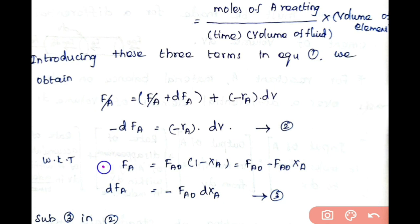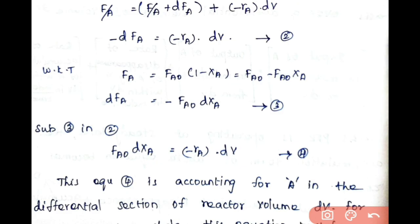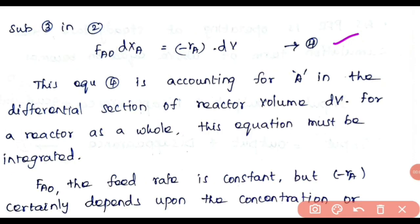We know that FA = FA0·(1 − XA), so differentiating gives dFA = −FA0·dXA (Equation 3), since FA0 is constant. Substituting Equation 3 into Equation 2: −(−FA0·dXA) = −rA·dV, so FA0·dXA = −rA·dV. This is Equation 4, which accounts for reactant A in the differential section of reactor volume dV.